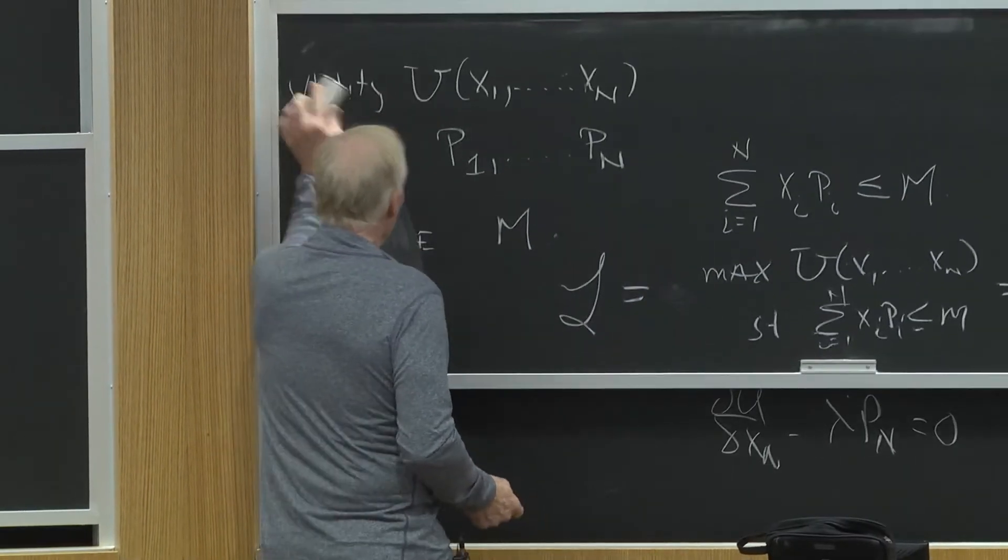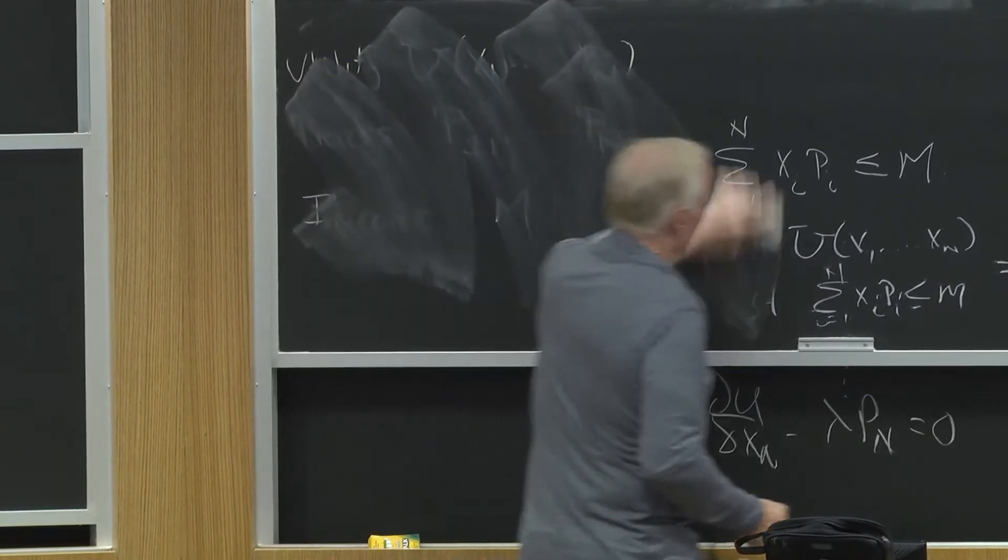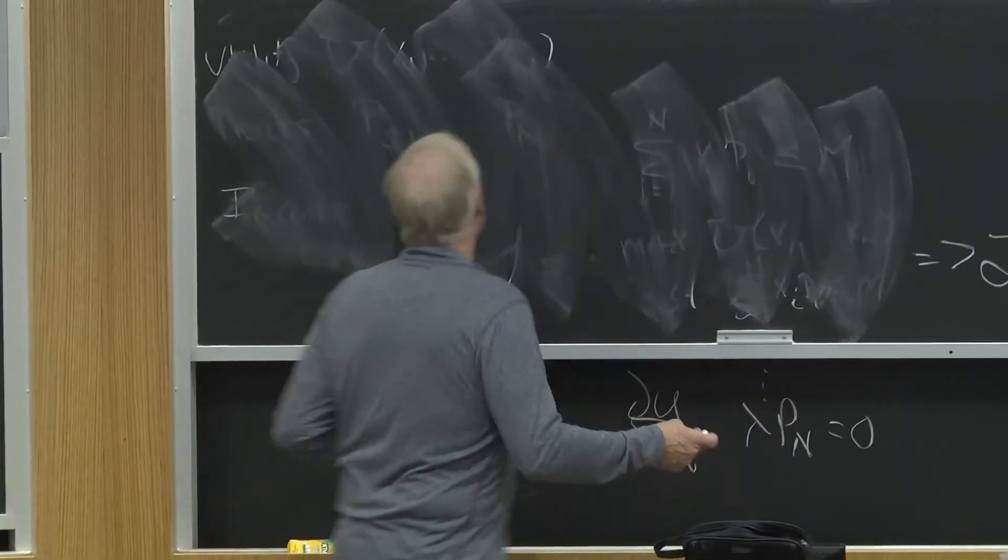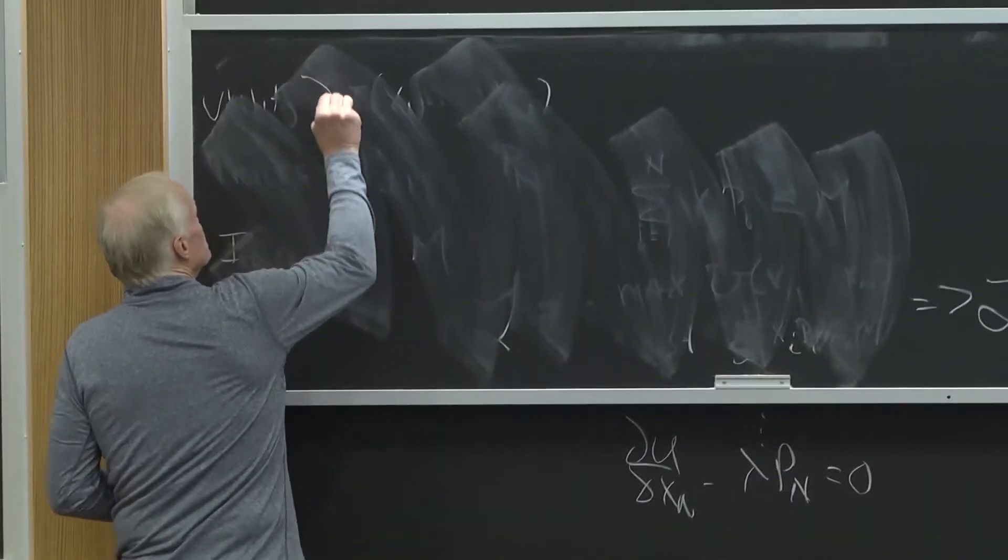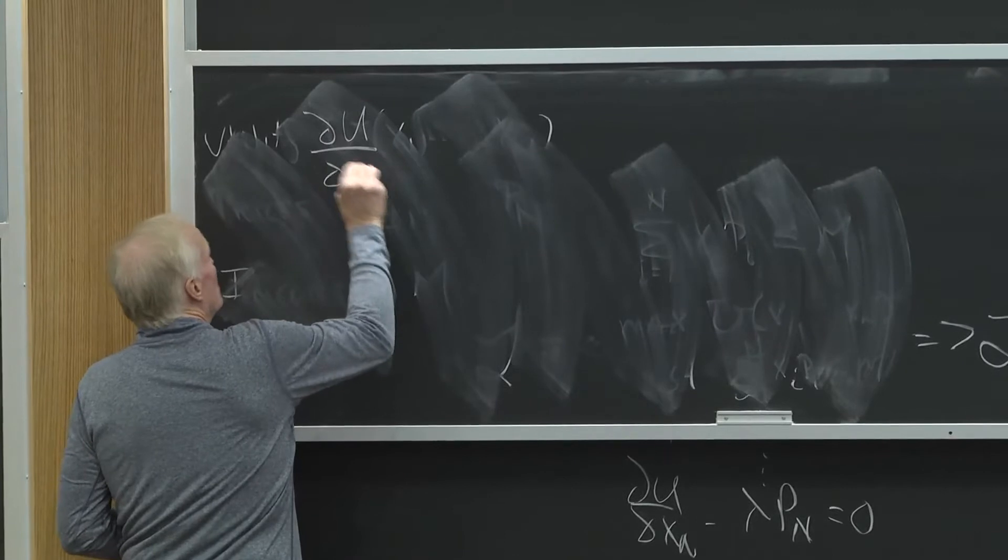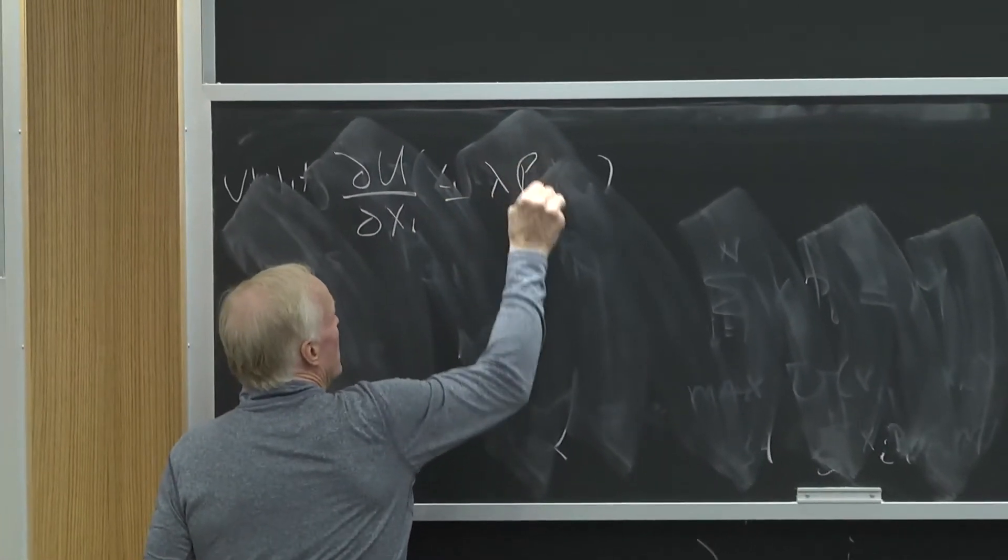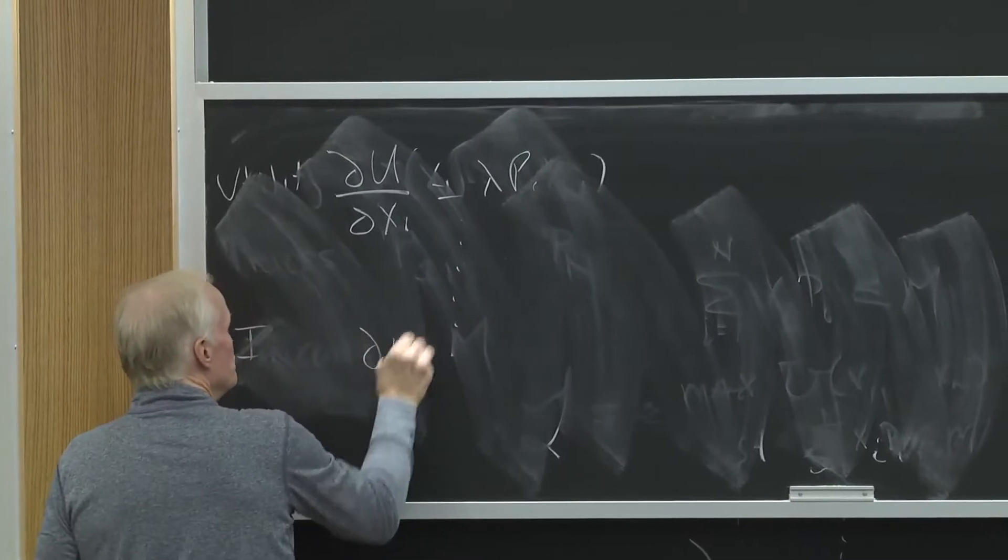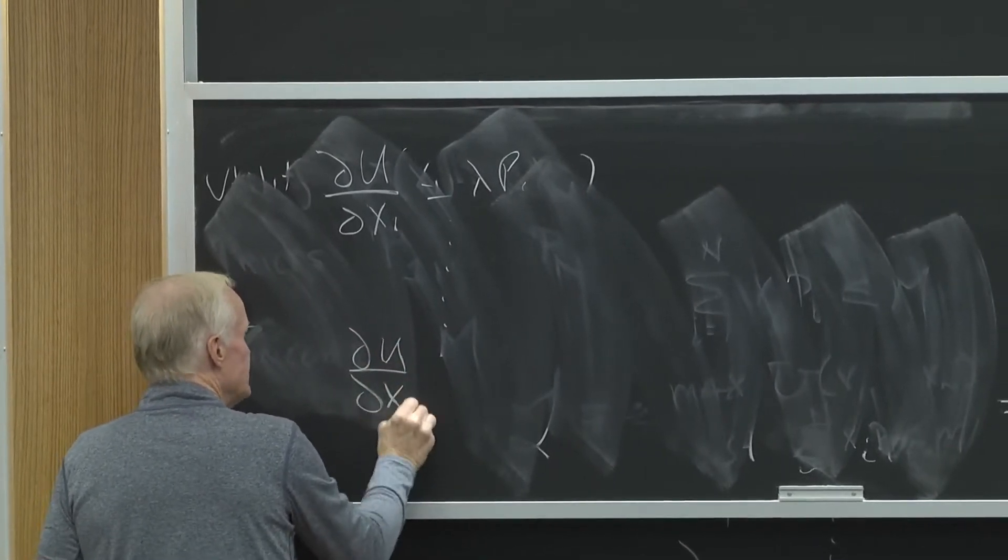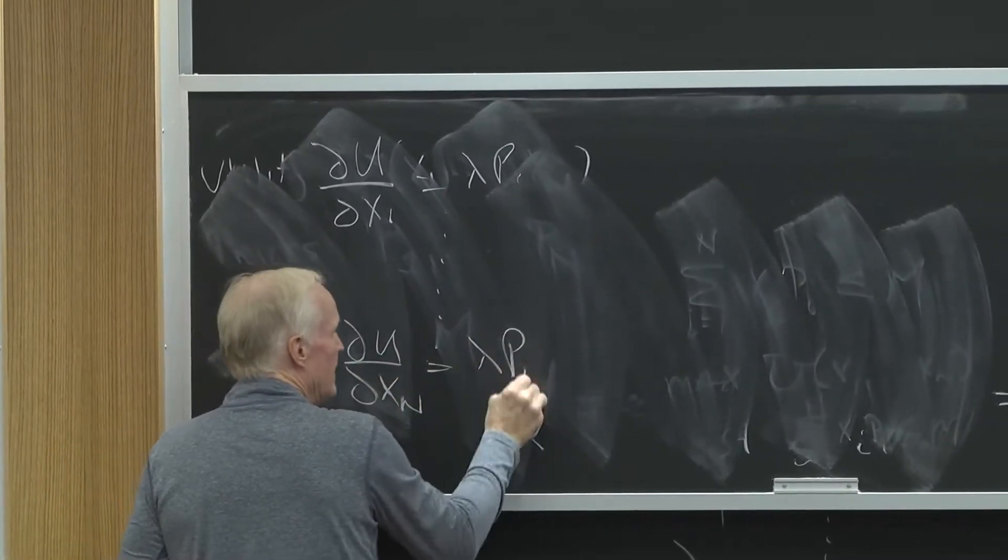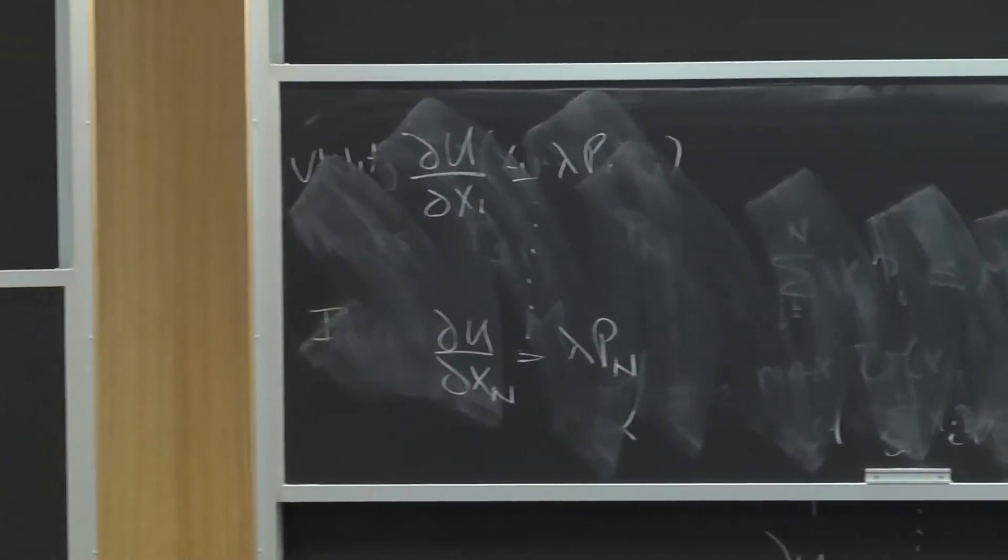Now, another thing that you could think about, and this makes sense, is just looking at the equations that we started with. Partial u partial x1 equals lambda p1 down to partial u partial xn equals lambda pn. I got my n equations.